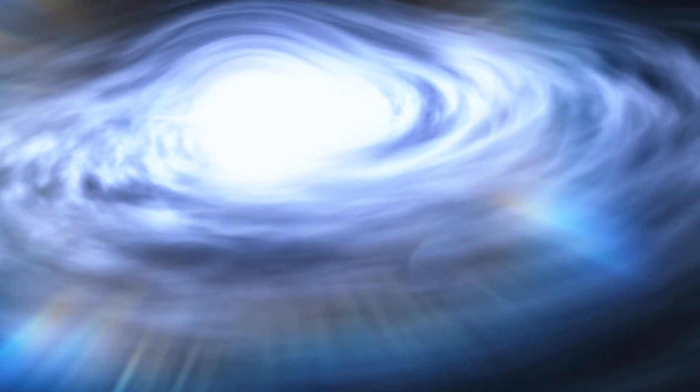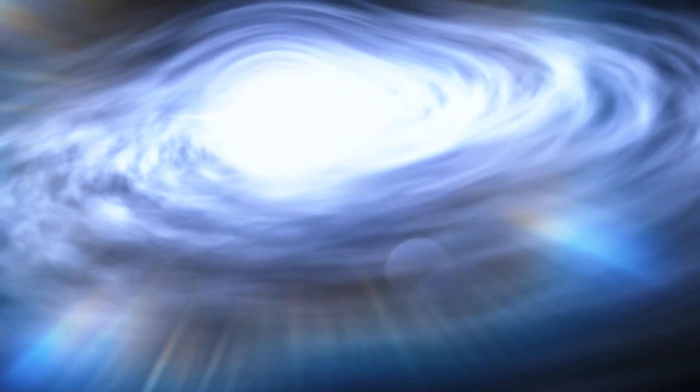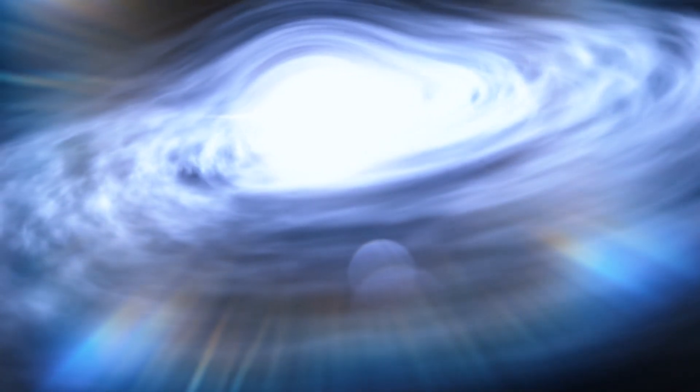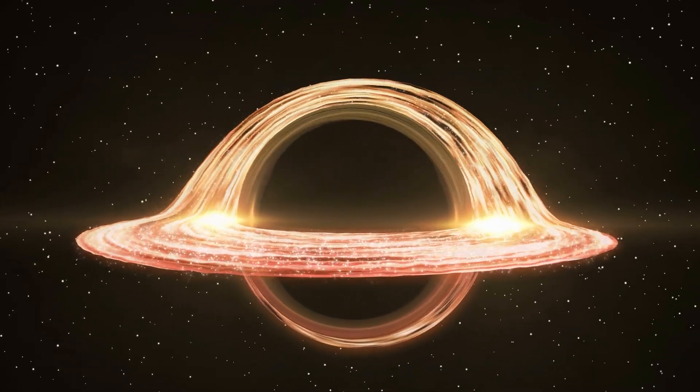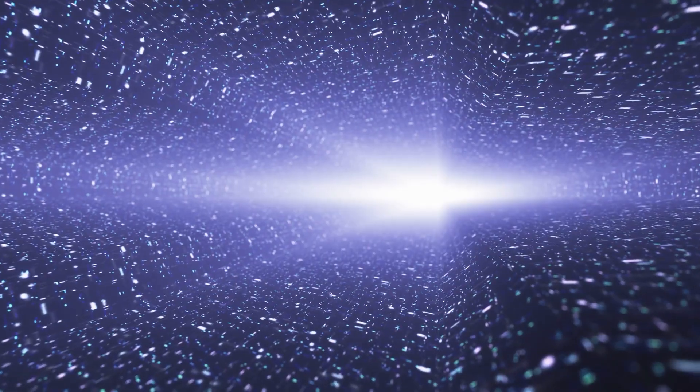Black holes happen when massive stars explode and become super dense. They have a point called a singularity and a boundary called an event horizon, beyond which nothing escapes, not even light. Think about a white hole as a super odd twin of a black hole. They have a singularity and event horizon too, but here's the twist. Anything that gets close to a white hole gets shot out like a cannonball even faster than light. This creates a bright flash as stuff gets pushed away. It's like a reverse black hole where things are kicked out instead of sucked in.